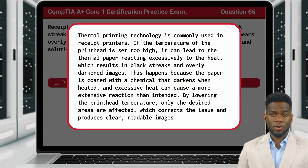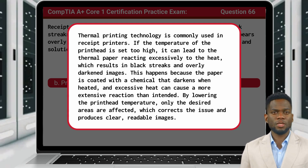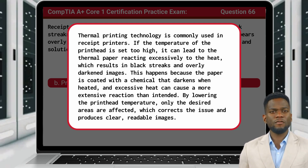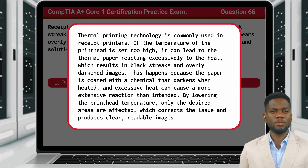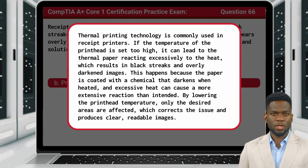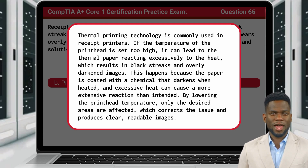Thermal printing technology is commonly used in receipt printers. If the temperature of the print head is set too high, it can lead to the thermal paper reacting excessively to the heat, which results in black streaks and overly darkened images. This happens because the paper is coated with a chemical that darkens when heated, and excessive heat can cause a more extensive reaction than intended. By lowering the print head temperature, only the desired areas are affected, which corrects the issue and produces clear, readable images.